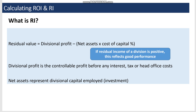Residual income equals divisional profit minus net assets multiplied by the cost of capital given as a percentage. If residual income is positive, this reflects good performance; if negative, it reflects poor performance. Residual income represents the value addition made by a division towards the shareholdings of the organization.